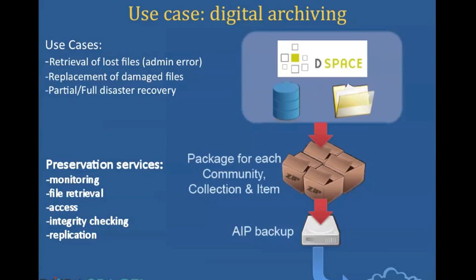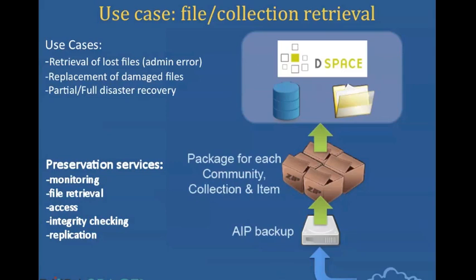The key preservation archiving use case that many of our pilot partners were testing was the ability to retrieve lost files, damaged files, or do a partial or full disaster recovery. In the case of DSpace, you would create an AIP package — an archival information package — and that package would then be backed up in a zip file to your DuraCloud account. Then from your DSpace administrative interface, if you want to replace or retrieve a lost file, you can automatically recall that file back from your DuraCloud instance. You can also run health checks and monitoring from the DSpace interface.